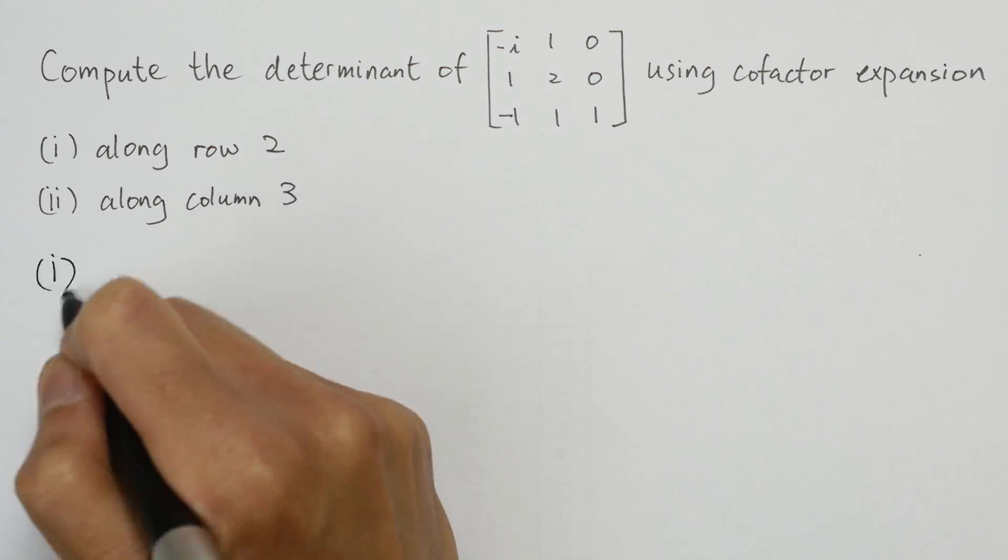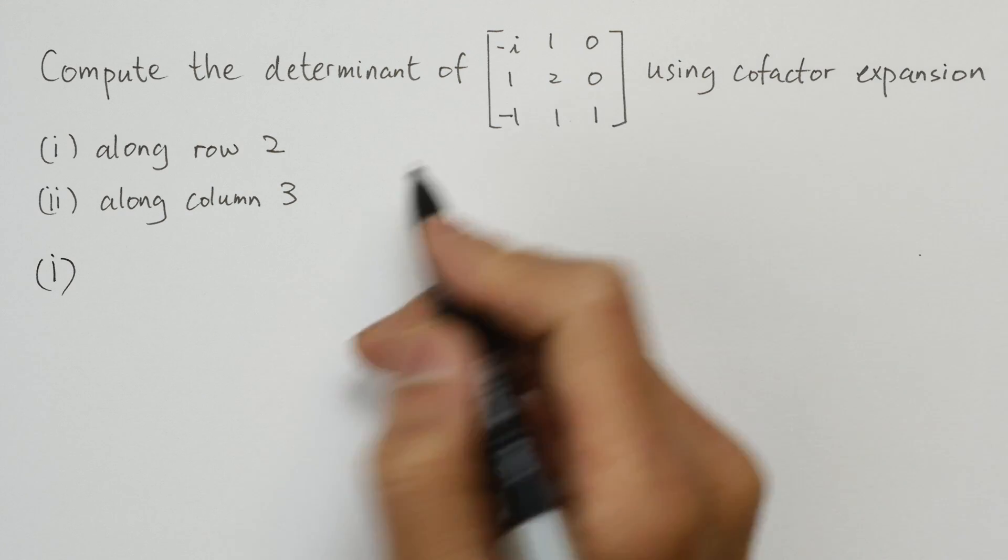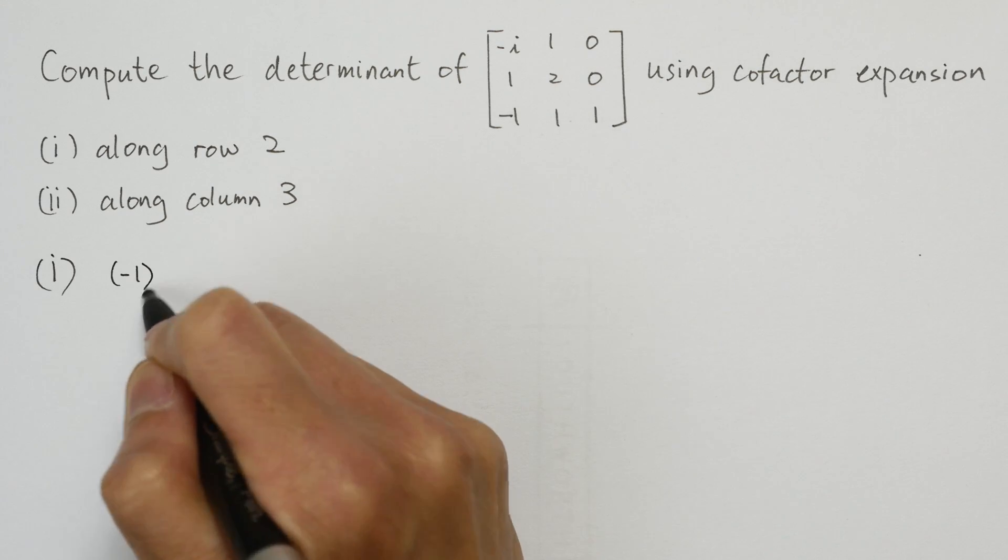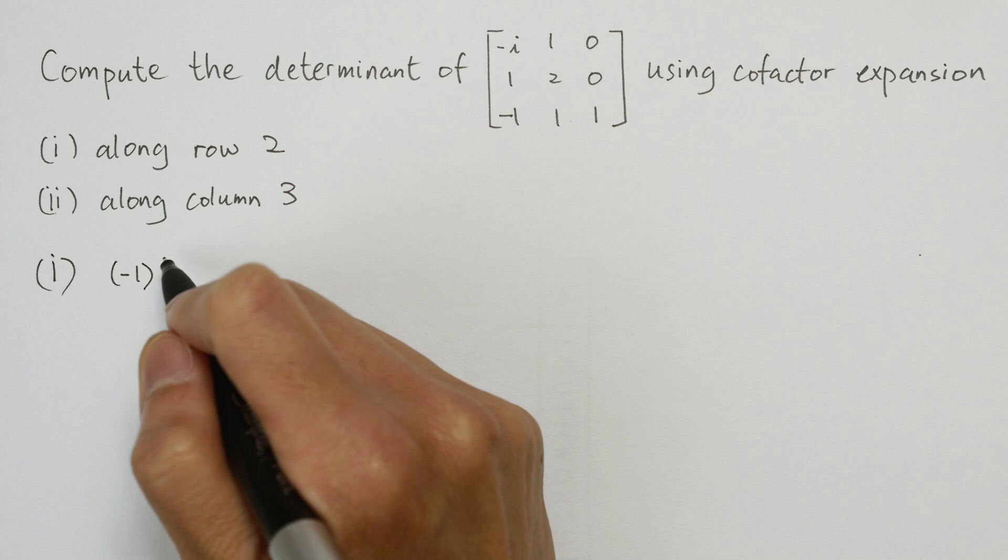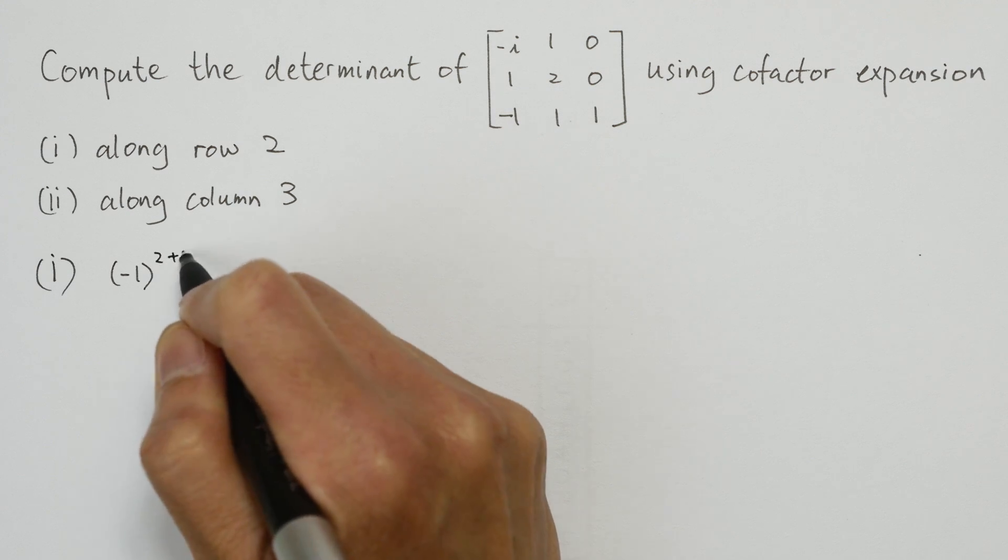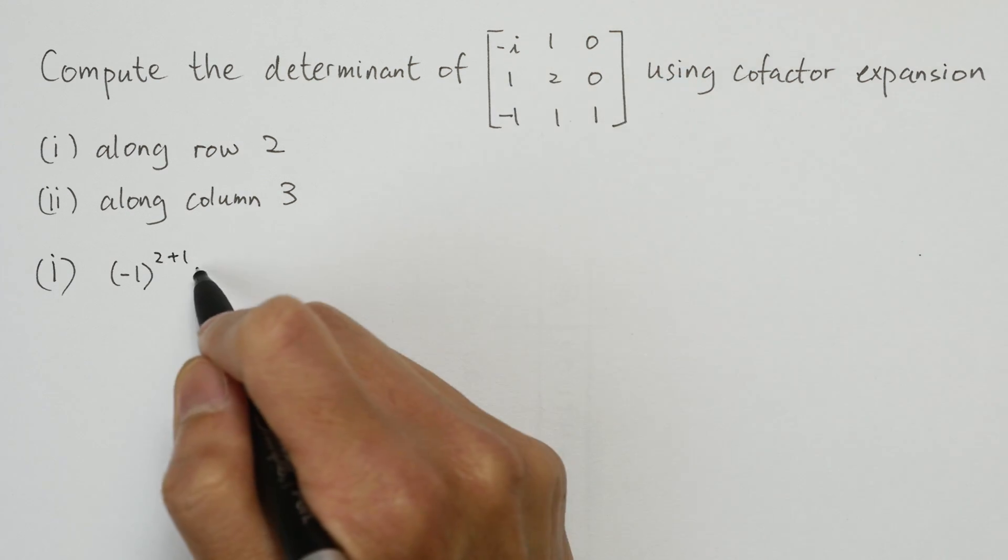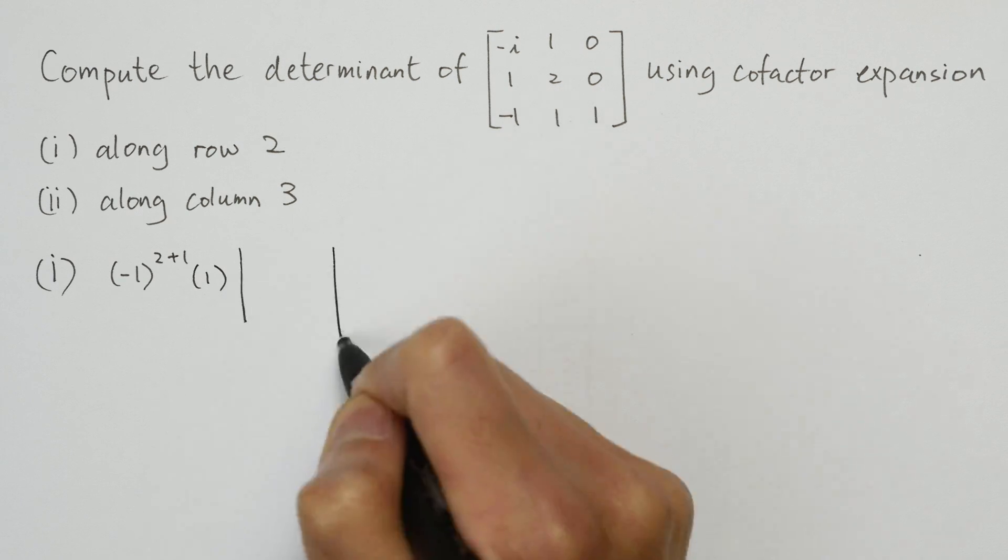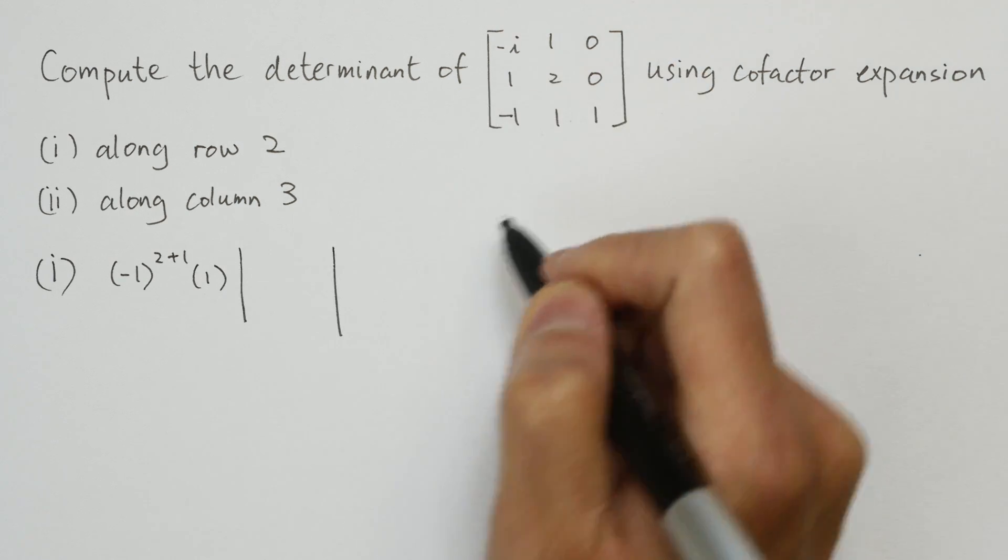To expand along row 2, we go across the elements in row 2, with one term per element. The first term is minus 1 to the row index plus the column index of the first element, times the element itself, times the determinant of the submatrix formed from deleting row 2 and column 1.